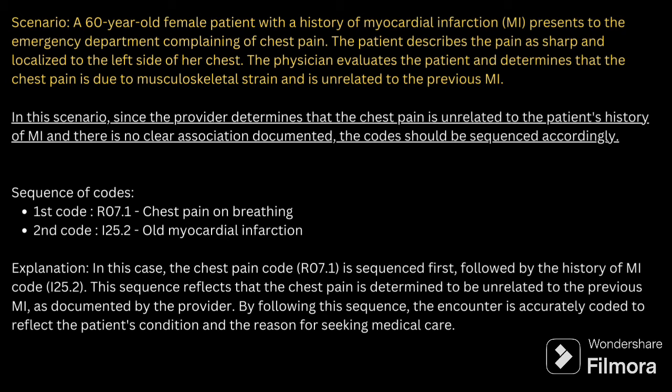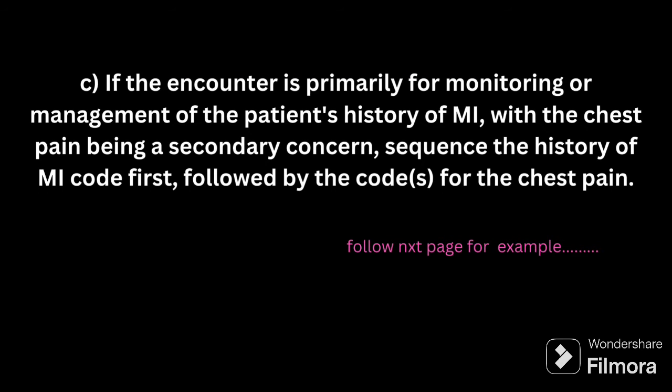Third point: if the encounter is primarily for monitoring and management of history of MI, with chest pain being a secondary concern, the history of MI should be sequenced as the primary code followed by chest pain. Here the patient is coming to the hospital for the treatment related to history of MI, so the primary attention is given to history of MI. Even though they are related, history of MI is coded as primary and chest pain as secondary.